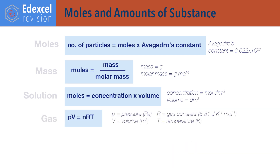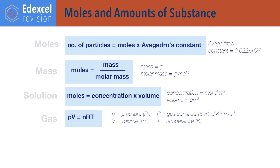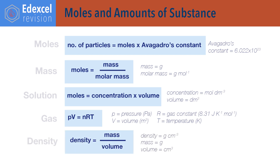PV equals nRT. This is the ideal gas equation, where P equals pressure in pascals, V equals volume in metres cubed, N equals number of moles, R is the universal gas constant — 8.31 joules per kelvin per mole — and T is temperature in kelvin.